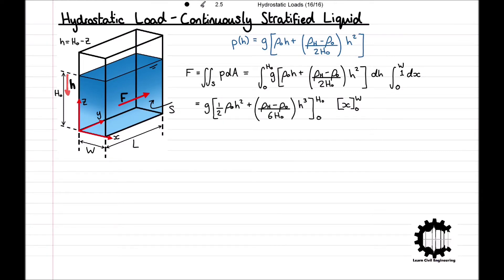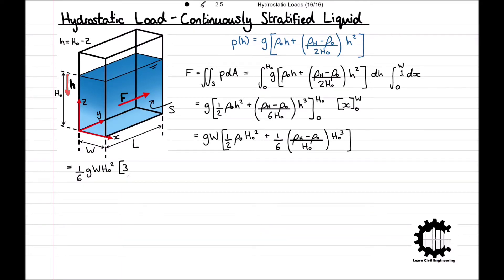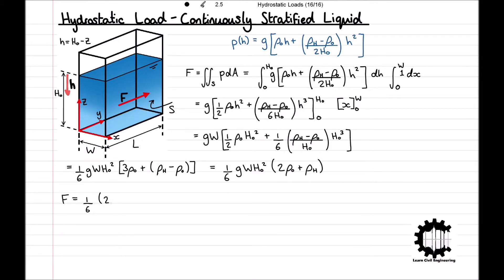Substituting the boundary limits, F = g·W × [½·rho_0·h_0² + (1/6)·(rho_h − rho_0)/h_0·h_0³]. Factoring h_0² and 1/6 out of the brackets gives F = (1/6)·g·W·h_0²×(3·rho_0 + rho_h − rho_0), which simplifies to F = (1/6)·g·W·h_0²·(2·rho_0 + rho_h). Since A = W·h_0, this becomes F = (1/6)·(2·rho_0 + rho_h)·g·h_0·A.